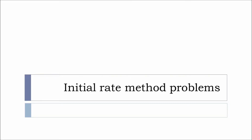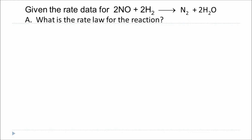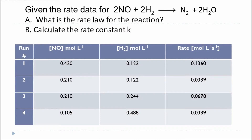In this video, I'm going to show you how to solve a problem on the initial rate method, so that you can determine the order of a reaction and the individual orders of the reactants. Here is the reaction between nitric oxide and hydrogen to produce nitrogen and water. What is the rate law for the reaction, and calculate the rate constant? These are the two things you have to do based on the experimental data that has been collected. This data table gives you the information needed for determining the rate law or the order of the reaction.